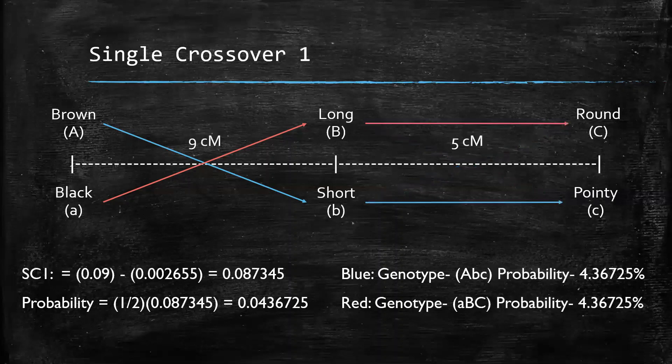Next, we have our single crossover 1 events. There are two possible gametypes because there are two possible single crossover 1 events. Following the blue arrows, we can see our first gametype is big A, little B, little C. Following the red arrows, we can see our second gametype is little A, big B, big C.